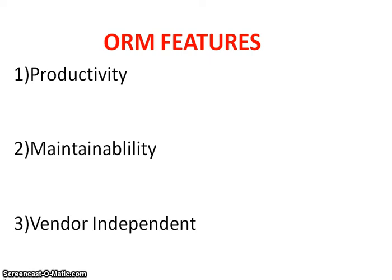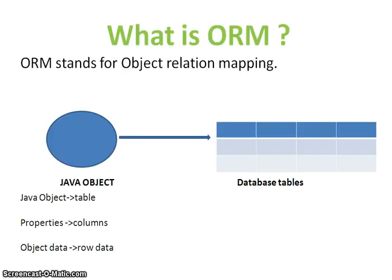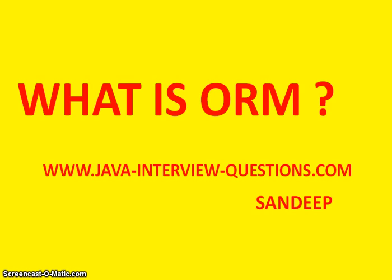These are the important features of ORM: productivity, maintainability, and vendor independence. To recap, ORM is Object Relational Mapping — a process of mapping a Java class with a database table, properties in a Java object with columns in a database table, and object data with row data. Hope you understand what ORM is and what its features are. Thanks for watching. If you like my videos, don't forget to subscribe.